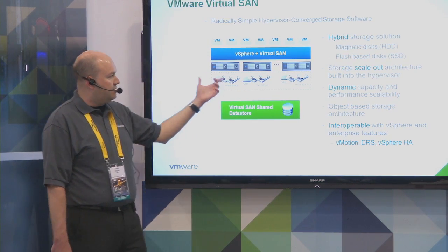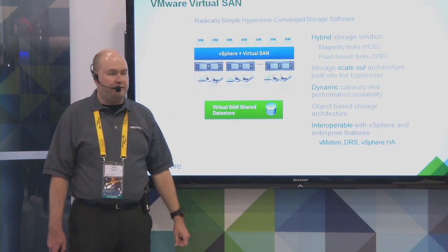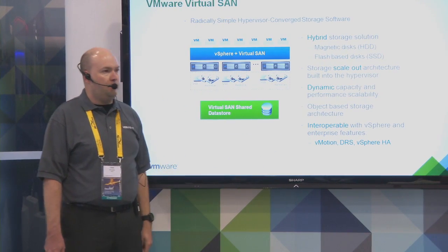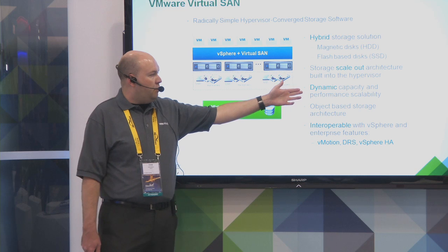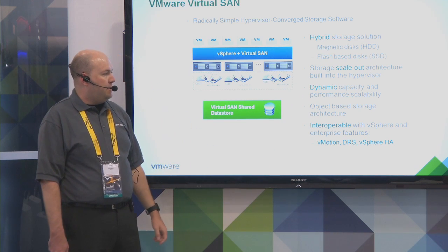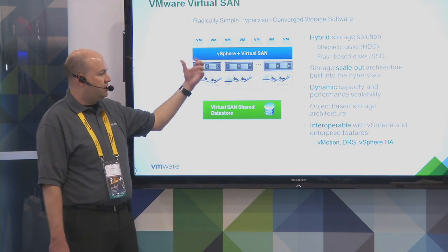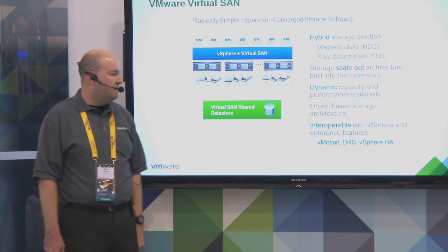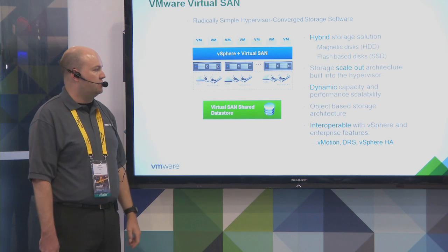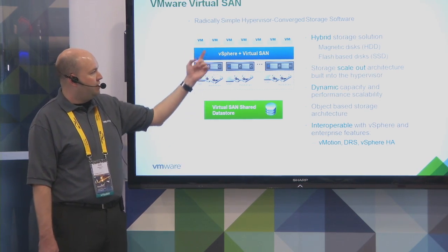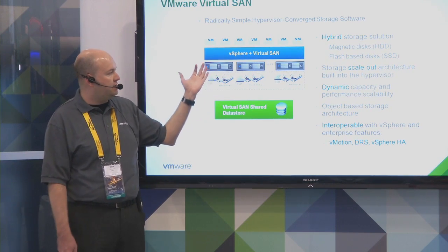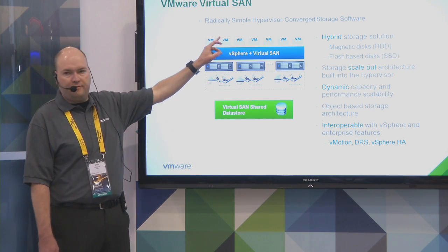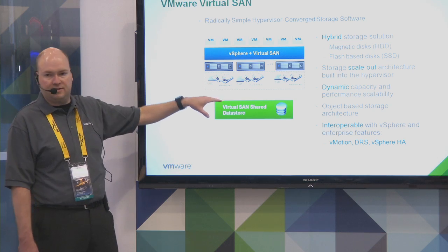It's radically simple. We can scale from three nodes all the way out to 32. We use a mix of SSD and hard drives to create a hybrid-style array. We can dynamically scale capacity. It's object-based storage, so we take the virtual machines and break those into objects and track the metadata across them. We set the replication policies defined as failures to tolerate — we can have one, two, three, or four copies of the data distributed across the cluster, providing a significant level of redundancy at the virtual machine level rather than the physical hardware level.